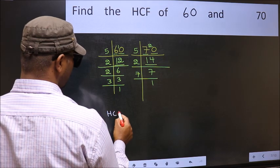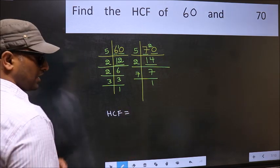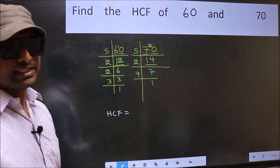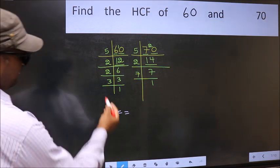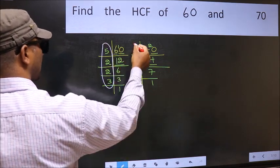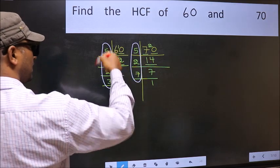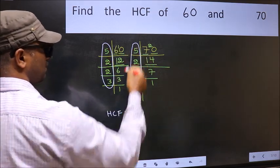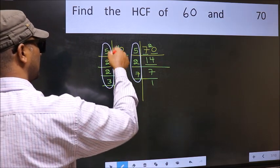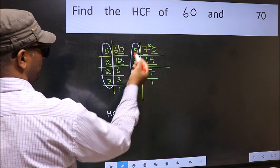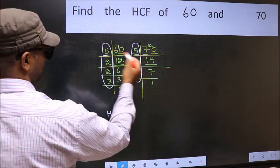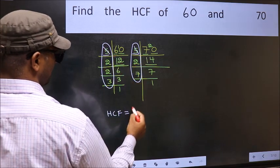Therefore, our HCF is the product of the numbers which should be present in both factorizations — that is here and also here. So now let us find the numbers present in both. Starting with the number 5 — do we have 5 here? Yes. So cut 5 right here.